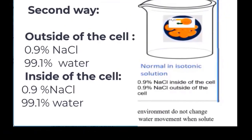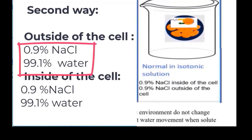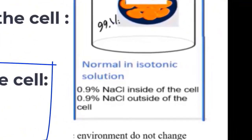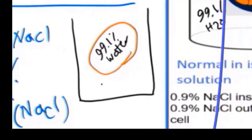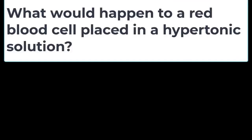Using the second way: outside, solute is 0.9% NaCl, so water is 99.1%. Inside of the cell, the concentration is the same — water is also 99.1%. So this red blood cell has 99.1% water inside and 99.1% water outside. You will have osmosis, but the net movement of water molecules is zero.